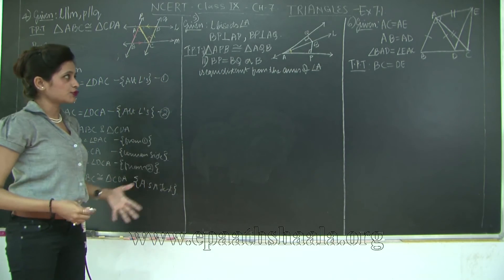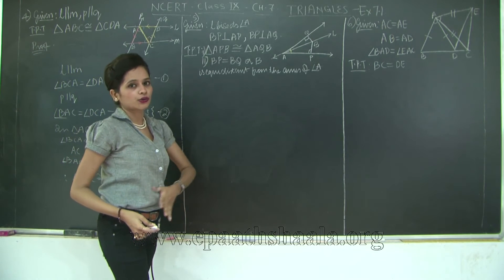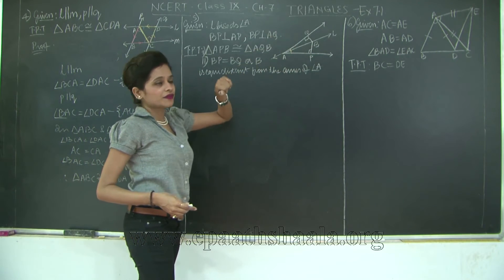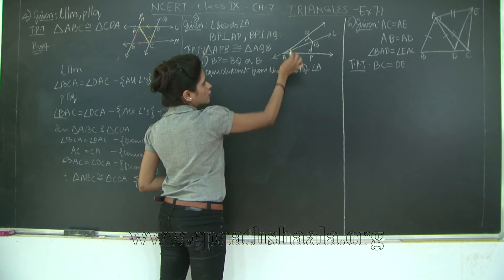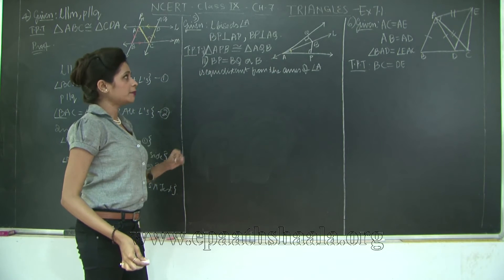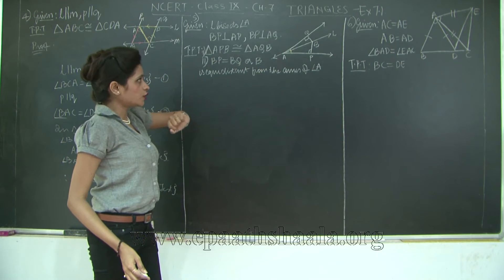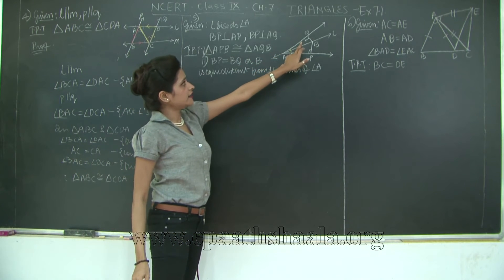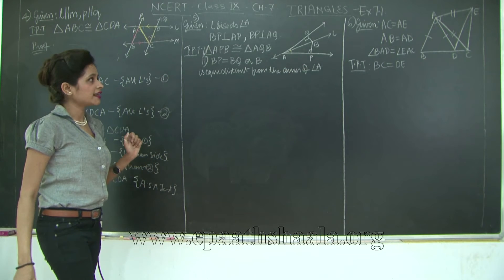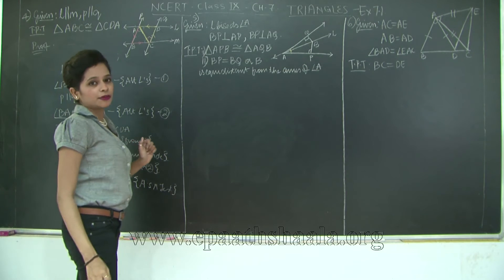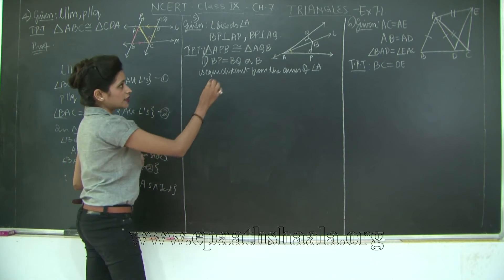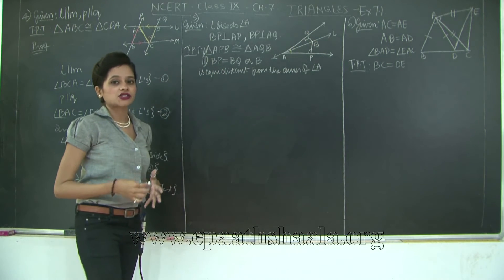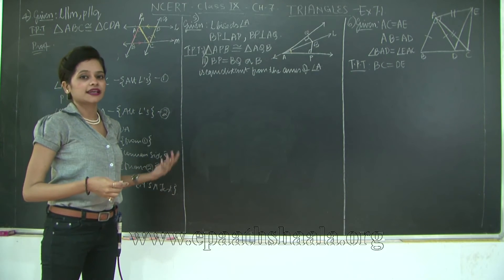To prove BP equal to BQ, we need to prove two triangles congruent: triangles ABP and ABQ. In these two triangles, angles BAP and BAQ are congruent because line L bisects angle A. We also have common side AB for both triangles, and right angles at P and Q. Therefore triangle ABP is congruent to triangle ABQ by the AAS test, and BP equals BQ by CPCT.